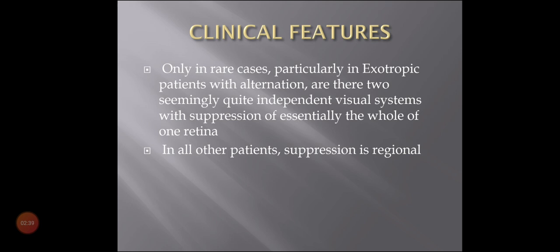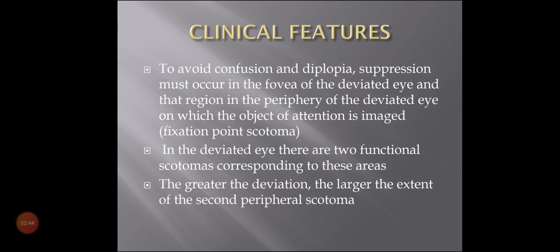In all other patients, suppression is regional — confined to some specific regions. To avoid confusion and diplopia, suppression must occur in the fovea of the deviated eye, or where the fixation point's image falls on that eye. This is called the fixation point scotoma. In the deviated eye, there are two functional scotomas corresponding to these areas. The greater the deviation, the larger the extent of the second peripheral scotoma.